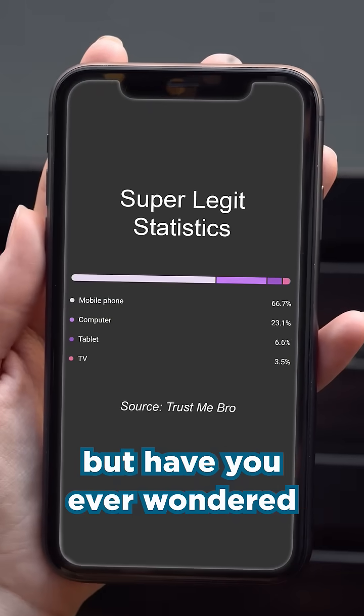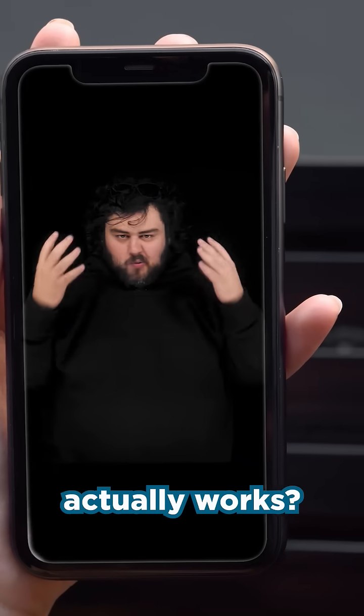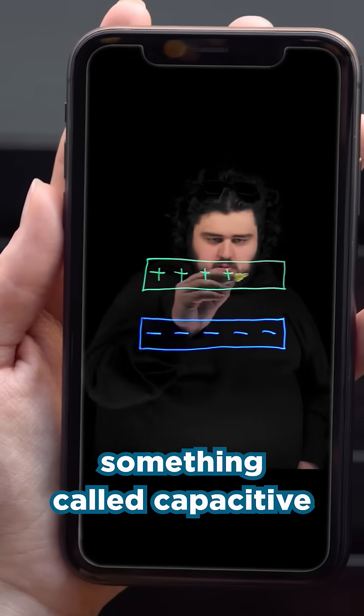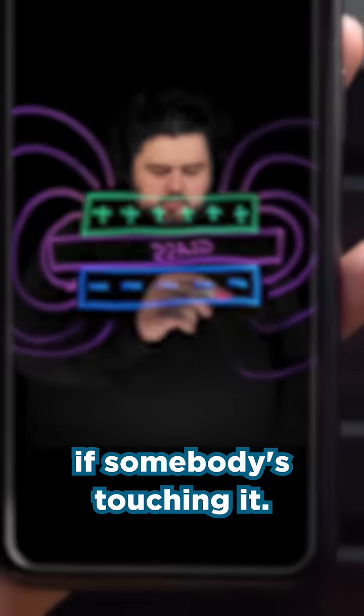Statistically, you are viewing this on a phone, but have you ever wondered how your touchscreen actually works? Your screen uses something called capacitive coupling to detect if someone is touching it.